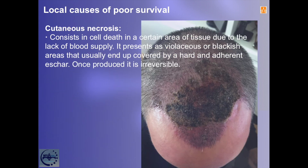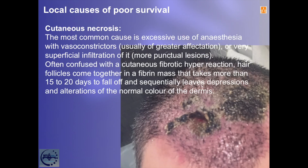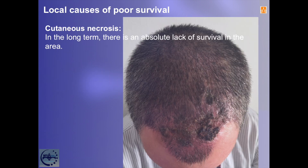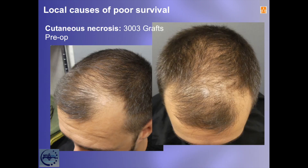The most common cause of necrosis is excessive use of anesthesia with vasoconstrictors, usually of greater affectation, or very superficial infiltration of it. More punctual lesions are often confused with a cutaneous fibrotic hyperreaction, where hair follicles come together in a fibrotic mass that takes more than 15 to 20 days to fall off, sequentially leaving depressions and alterations of the normal color of the dermis. In the long term there is an absolute lack of survival in the area. There is no treatment — the skin must be left to heal, the subcutaneous tissue regenerate, and then attempt a new transplant to the same area as if it were a scar repair.